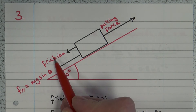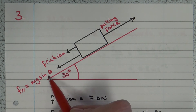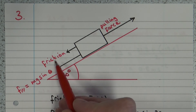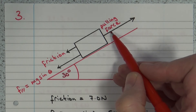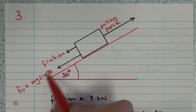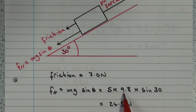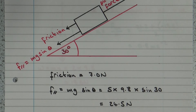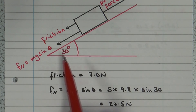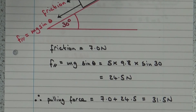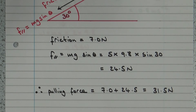The pulling force must equal the friction force plus the component of weight down the slope, mg sinθ. The friction force is 7 newtons, and working out mg sinθ: mass 5 × g 9.8 × sin 30° — make sure your calculator is in degrees — gives 24.5 newtons. So the pulling force equals 7 + 24.5, which gives a pulling force of 31.5 newtons.